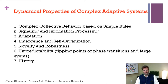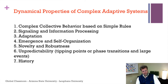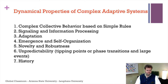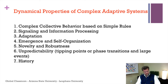Looking at the dynamical properties of complex adaptive systems and networks, beyond interaction based on simple rules there are a few more essential processes. Signaling and information processing is an essential way communication happens along networks. Adaptation means networks change through time and become better adapted to specific tasks. As a consequence, we see emergence and self-organization properties that arise only at the level of the network and are not present in any of the individual parts. Networks can also generate novelty — new and unexpected behaviors and features. Networks also tend to be relatively robust, in the sense that small perturbations often do not really affect their functioning.